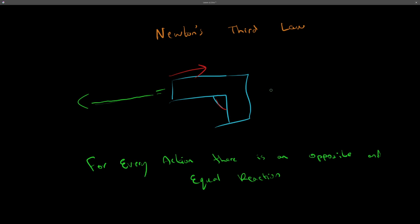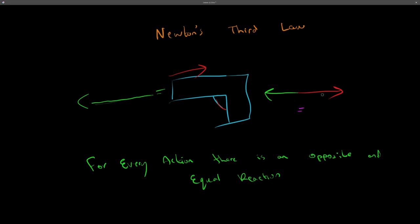Now I have a question: why don't I go at the same speed as the bullet? There should be an opposite and equal reaction. Doesn't that mean the magnitude of the force on the bullet should be equal and opposite to the force on my hand? There are two forces here — the force on my hand, shown by the red arrow, and the force of the bullet. They are equal in magnitude and just opposite in direction — one is going right, one is going left.